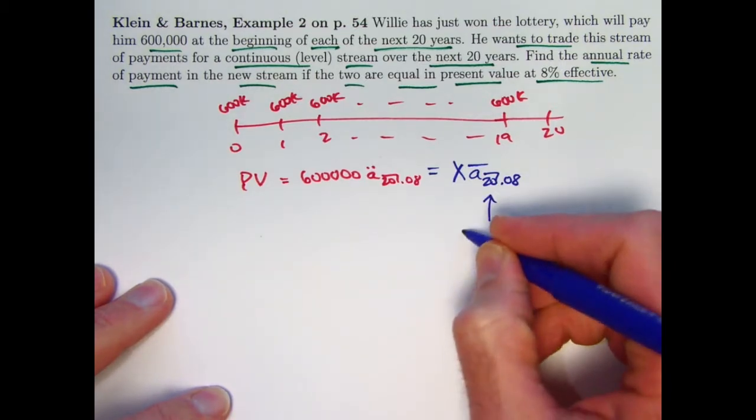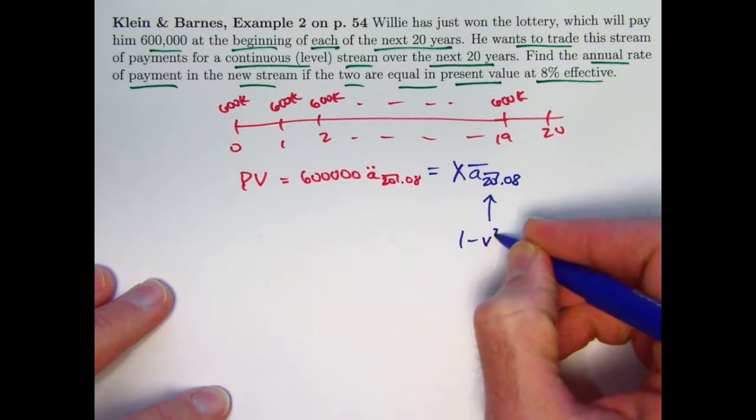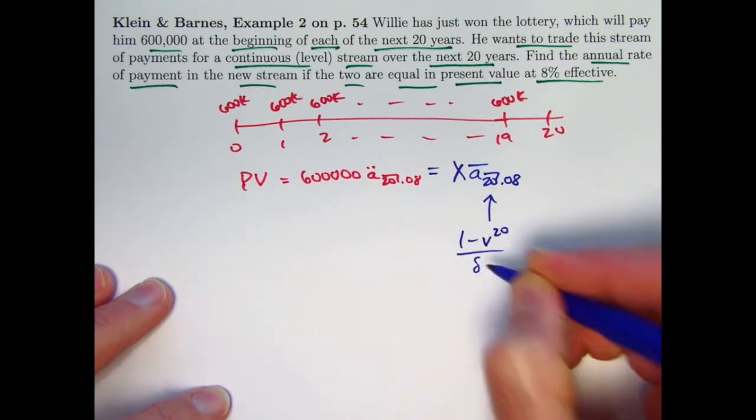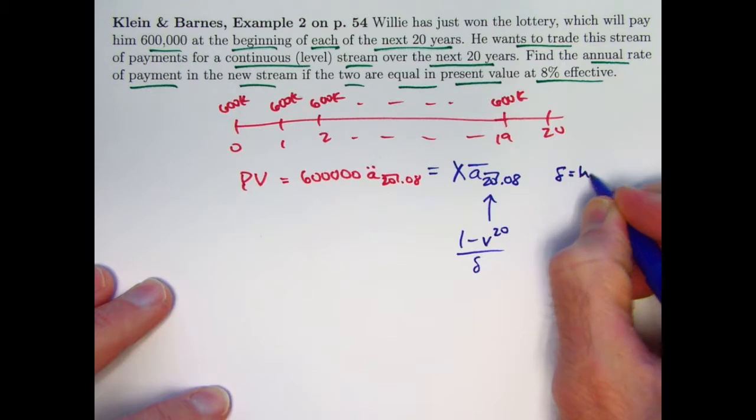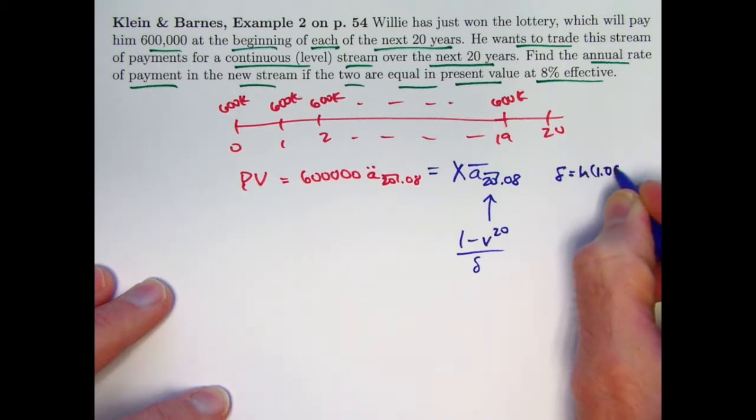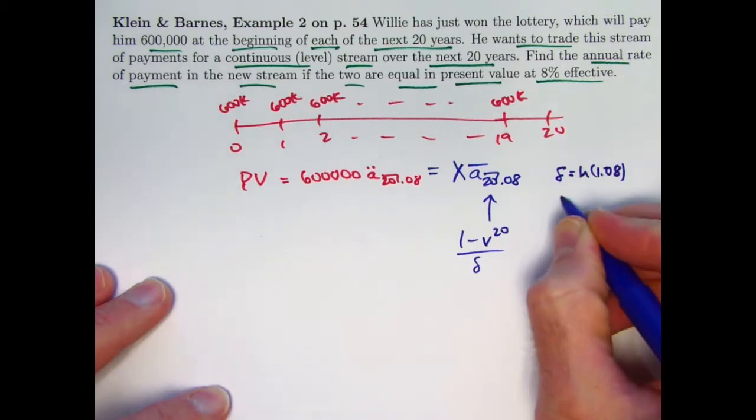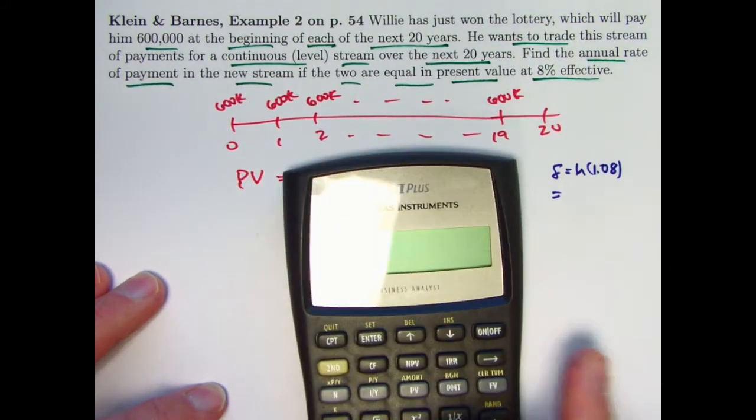So what's A bar? It's 1 minus v to the 20th divided by delta, where delta is going to be the natural log of 1 plus i, which is natural log of 1.08. Let's go ahead and figure that out first.